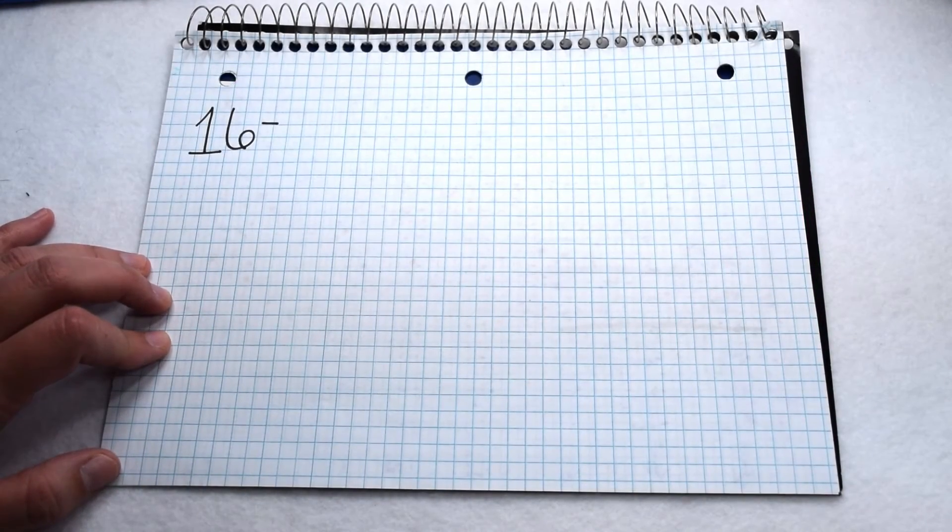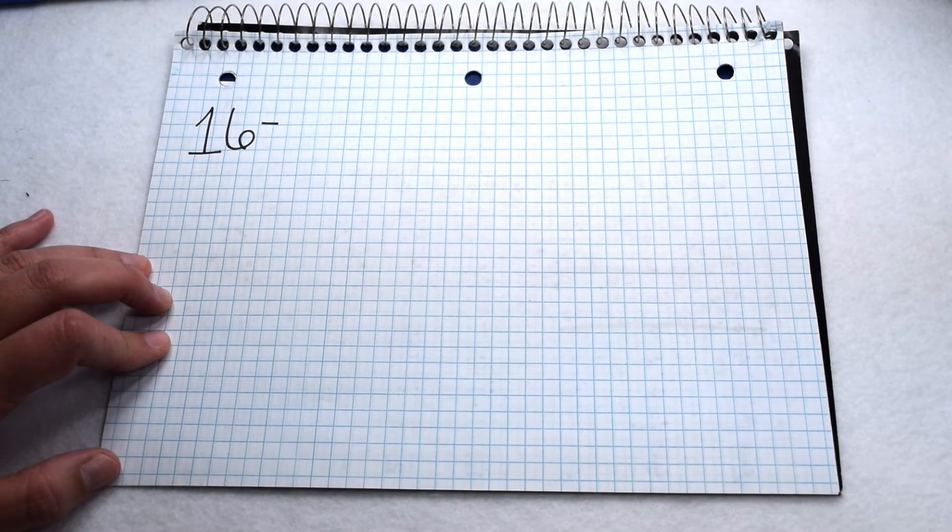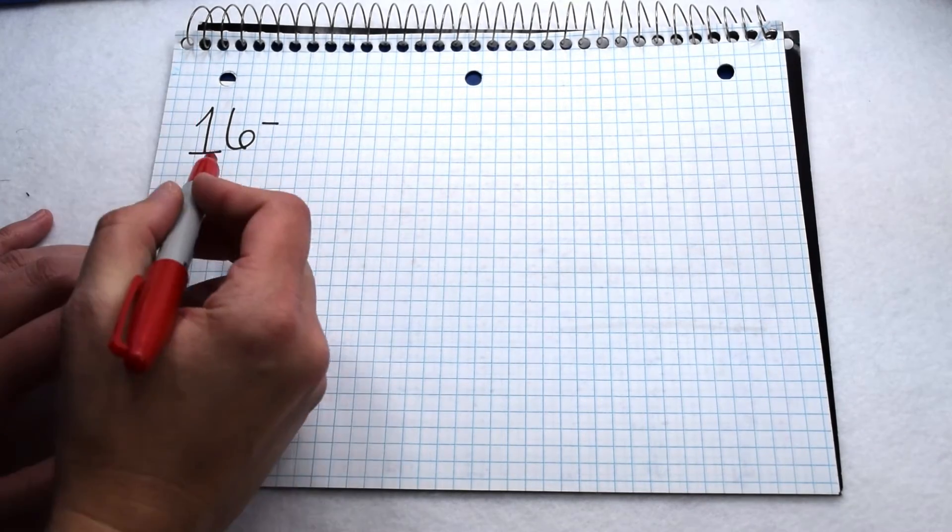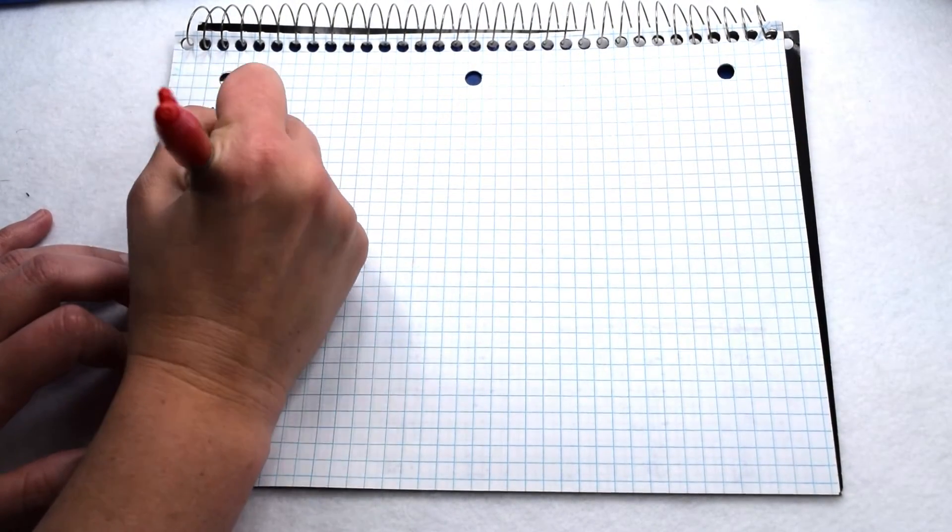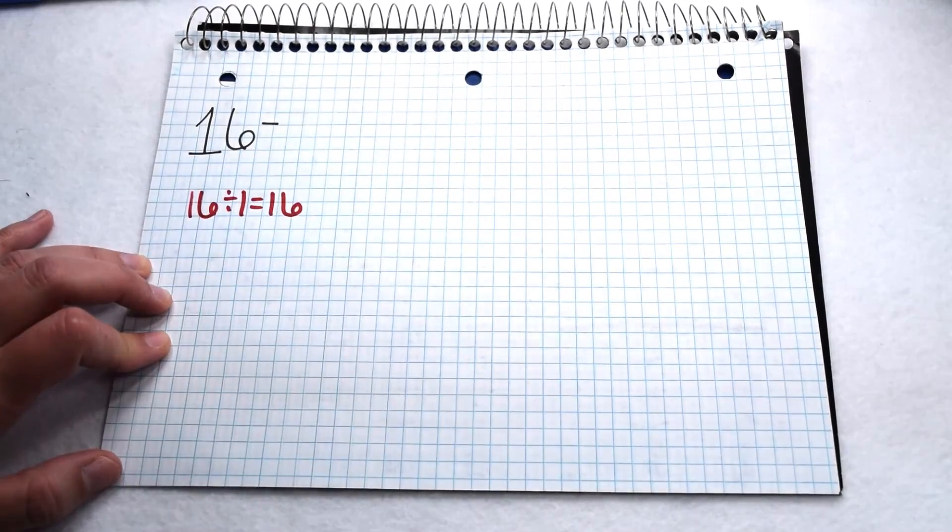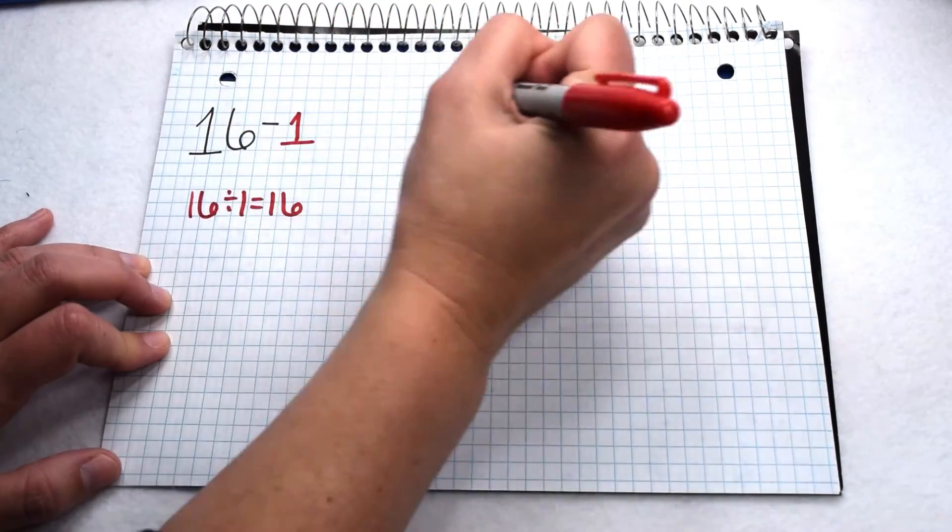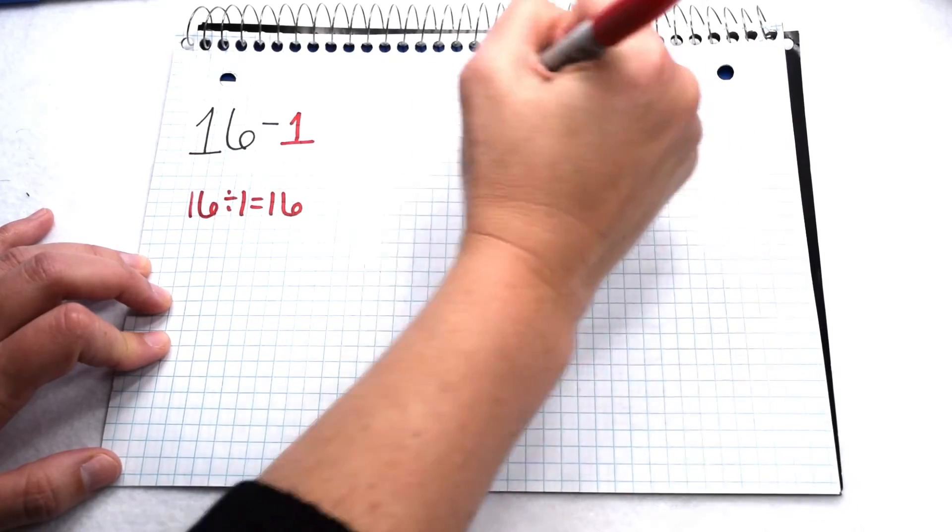Instead of writing out all the factor pairs of 16 we can also use our divisibility rules to create a list. We know that every number is divisible by 1. So when we do 16 divided by 1 we get 16. So we know on our list of factors of 16 we'll have 1 and 16.